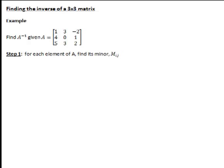In this recording we look at how to find the inverse of a 3x3 matrix. The first step is for each element of A in a given row i and column j, we find the minor of each element, written capital M subscript ij. So the minor of the element in row 1, column 1 is written M11.